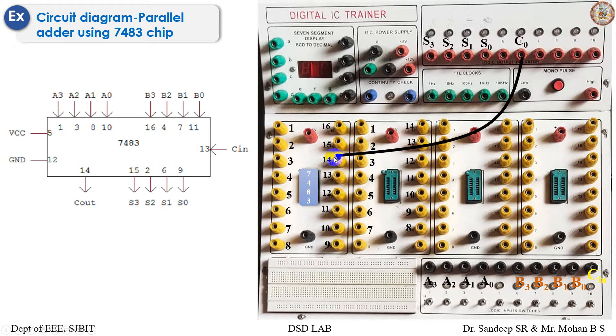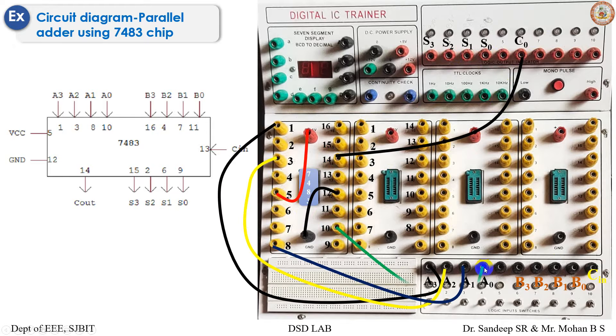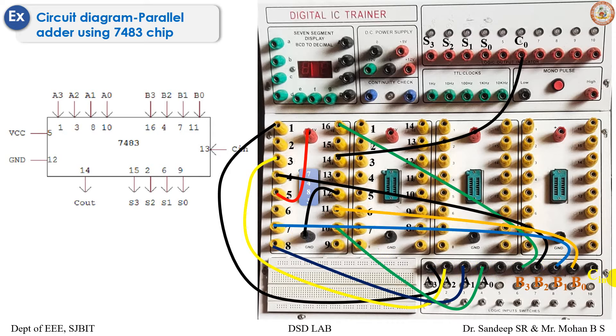Now the connections: pin 14 is connected to C_out, pin 5 is VCC, pin 12 is being grounded, and the inputs are pins 1, 3, 8, and 10 for A inputs. The other four-bit inputs are pin numbers 16, 4, 7, and 11 respectively for B3, B2, B1, and B0.